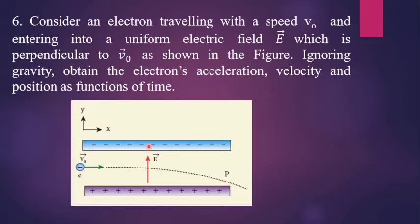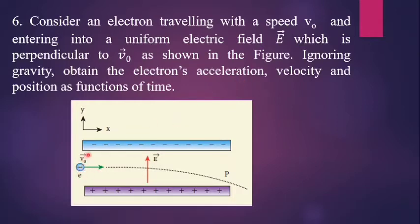This is the given figure. Consider two charged plates, up and down, with a uniform electric field acting between them. The electric field direction is bottom to top, shown by the red arrow mark. The electron is traveling at speed v0 and entering into the uniform electric field. The electron is moving perpendicular to the uniform electric field, as shown in the figure.